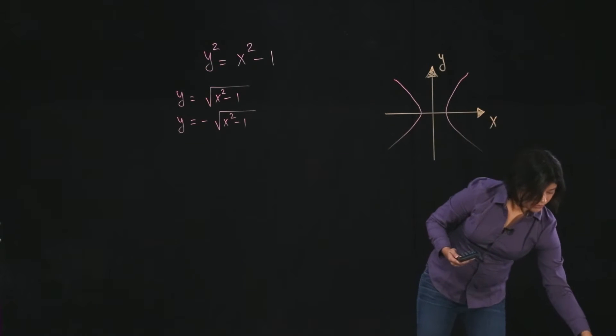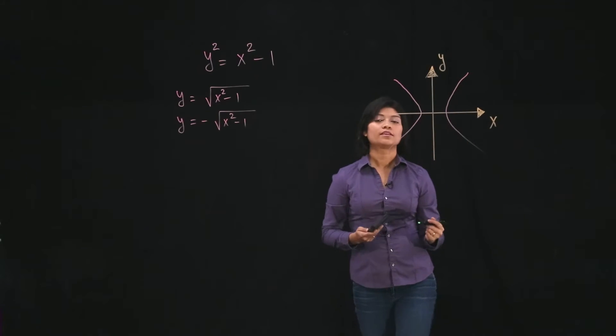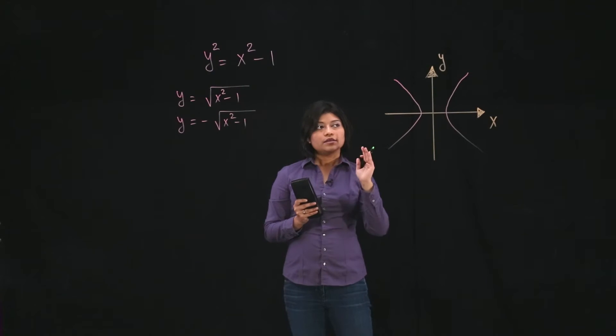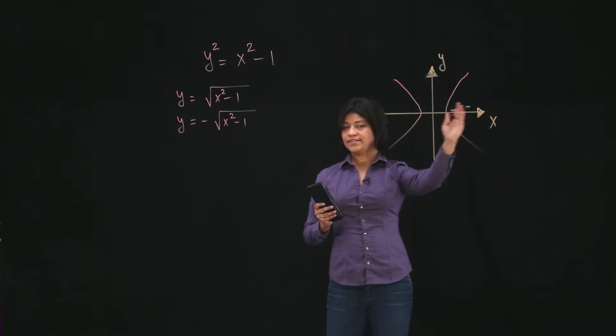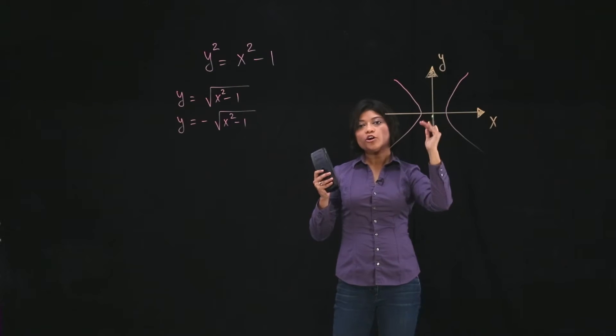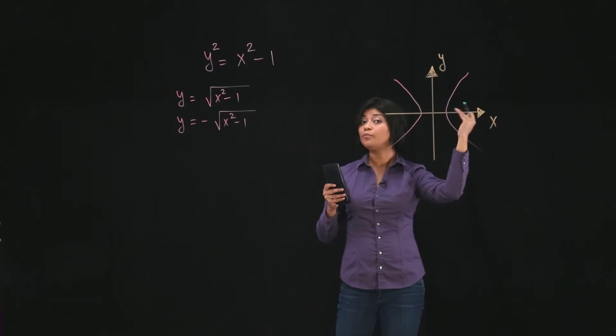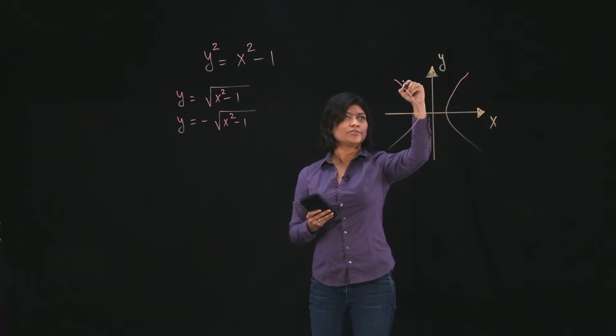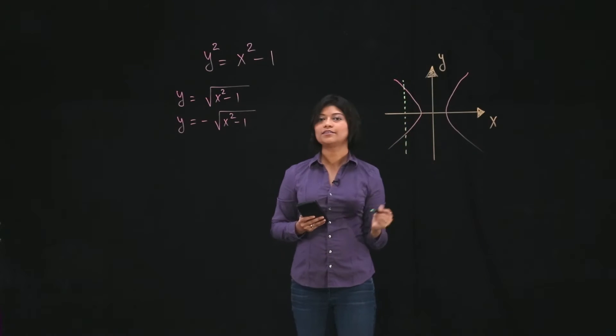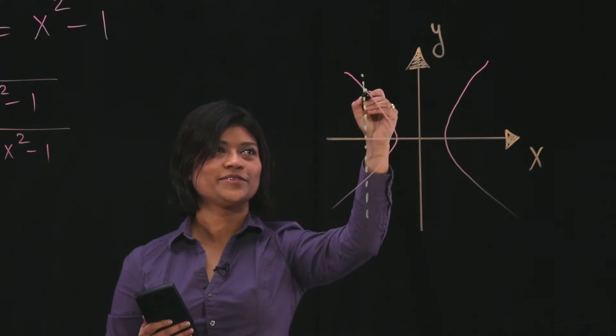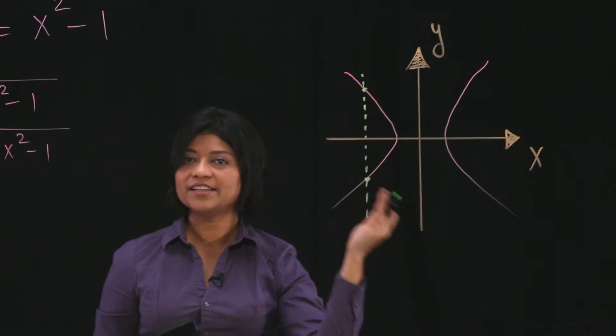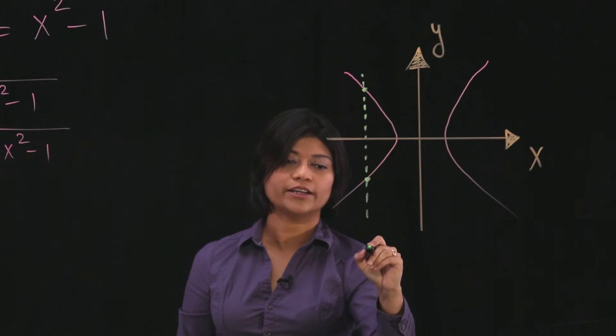Is it a function? Well, does it satisfy vertical line test? Do you remember what vertical line test is? You draw a vertical line anywhere in this graph. And if it crosses the graph more than one point, then it's not a function. Clearly, look, if I draw a vertical line right here, where is it crossing the graph? At least these two points, right? And so you can definitely say this fails vertical line test, so it's not a function.